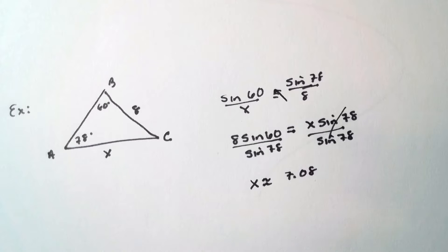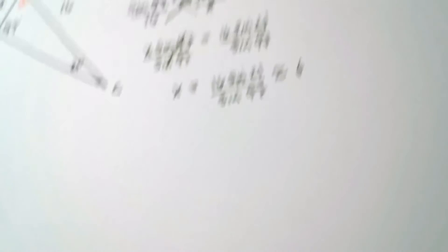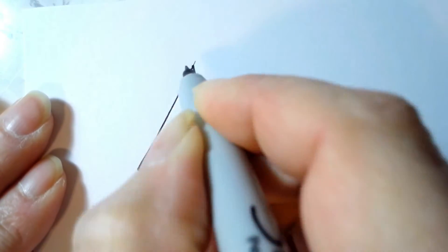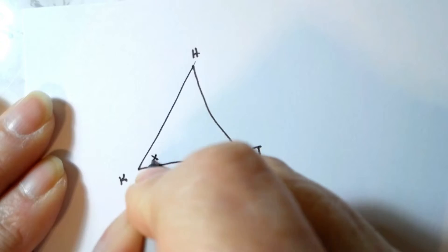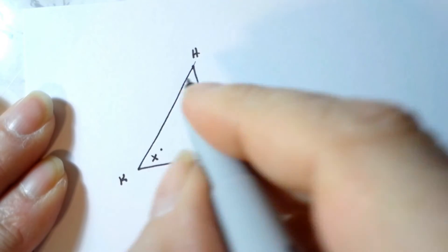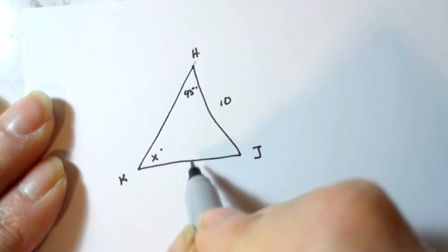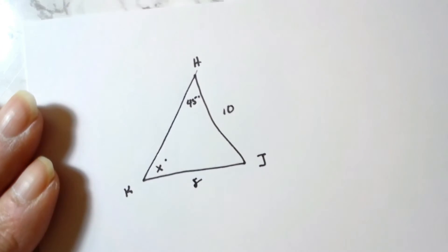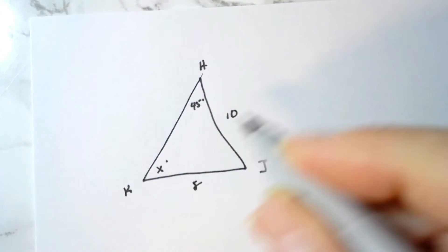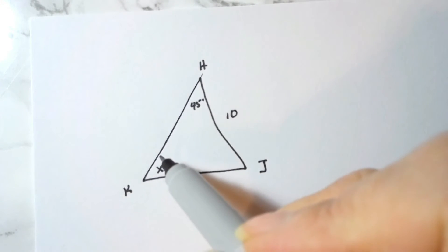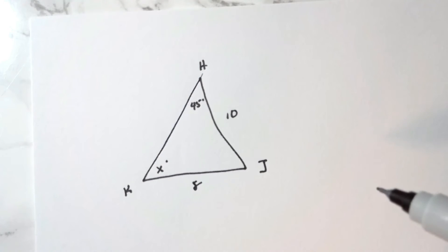Now suppose we have a triangle where x is an unknown angle. Suppose triangle KHJ has angle H equal to 45°, the side opposite K equal to 10, and the side opposite H equal to 8, and we're asked to find angle K which is x degrees. That's okay — I can still use the Law of Sines because I have a two-angles-and-non-included-side type of situation.